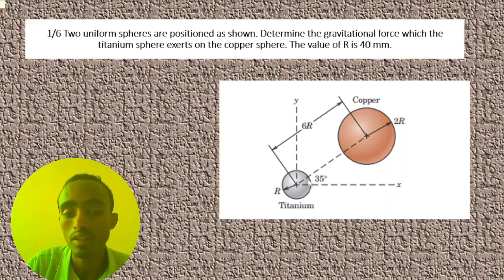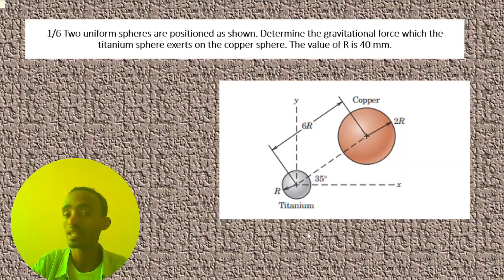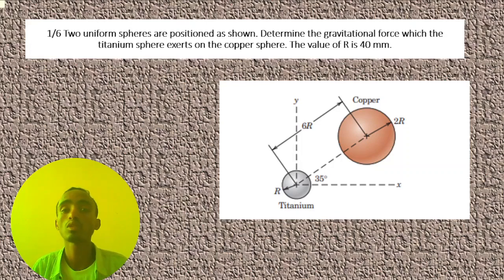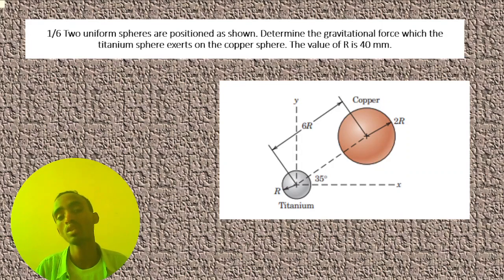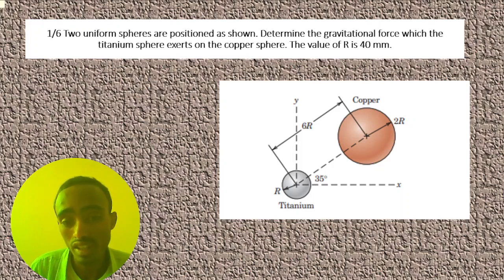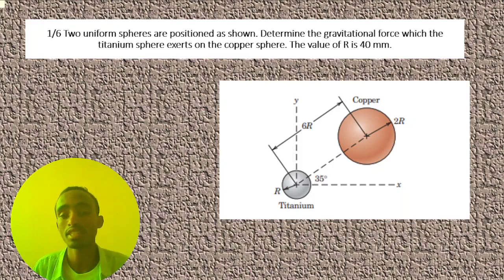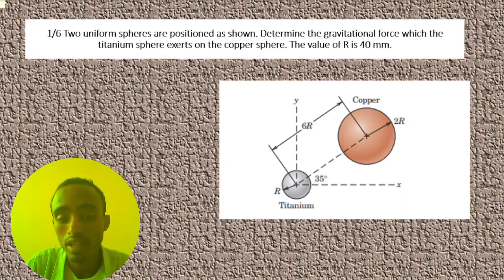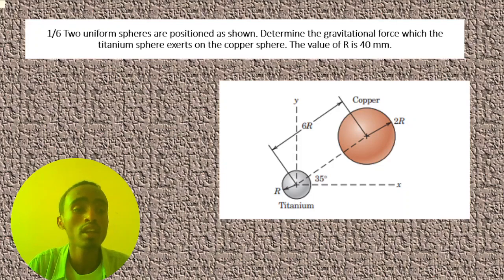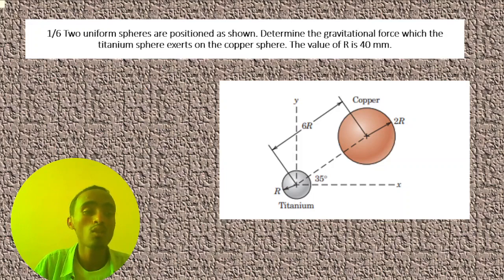We are also given a 35-degree angle, which is inclined from the center of the titanium sphere to the center of the copper sphere. In order to determine the gravitational force which the titanium sphere exerts on the copper sphere, we must first know the mass of the titanium sphere and the copper sphere.